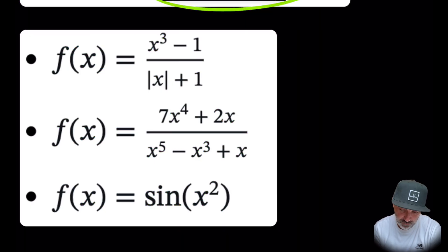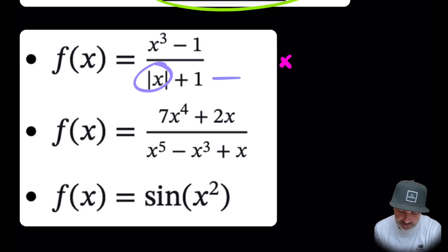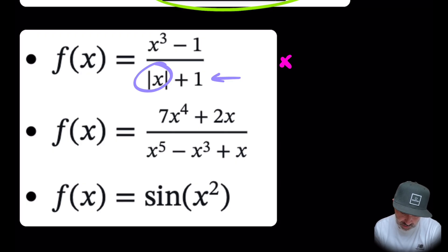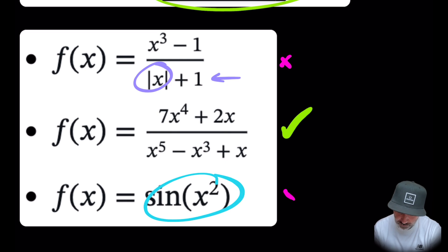Which are rational functions? The first is not a rational function because of the absolute value of x — this is actually a piecewise function, and the denominator is not a polynomial. The second: both numerator and denominator are polynomials, so this is a rational function. The last one involves a trig function, therefore it is not a rational function.